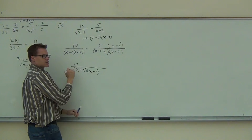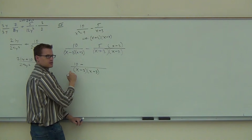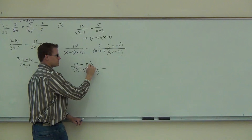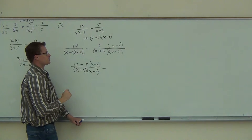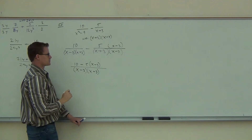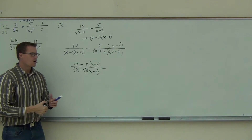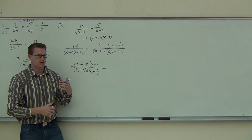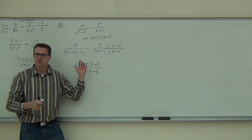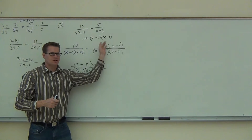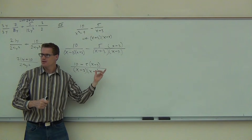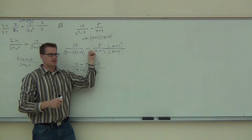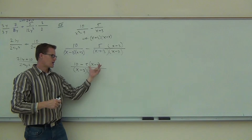We have 10 minus 5 times x plus 3. Do you remember: don't do any distribution until you get to this step? Because if they distribute early, a lot of people forget about that minus sign. We're not going to distribute denominators ever. But we will distribute the numerators because we've got to combine like terms.